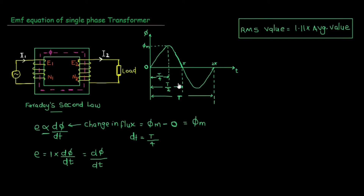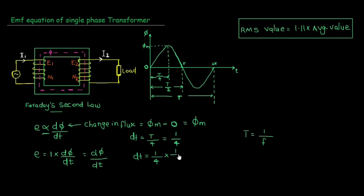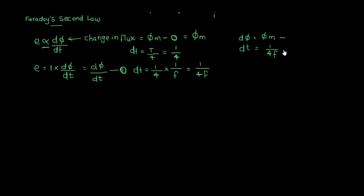If we consider the time period, when the flux is at its maximum value, the relevant time period is T/4. So dt is equal to T/4. Since the time period T is equal to 1/f, we get dt equal to 1/(4f).